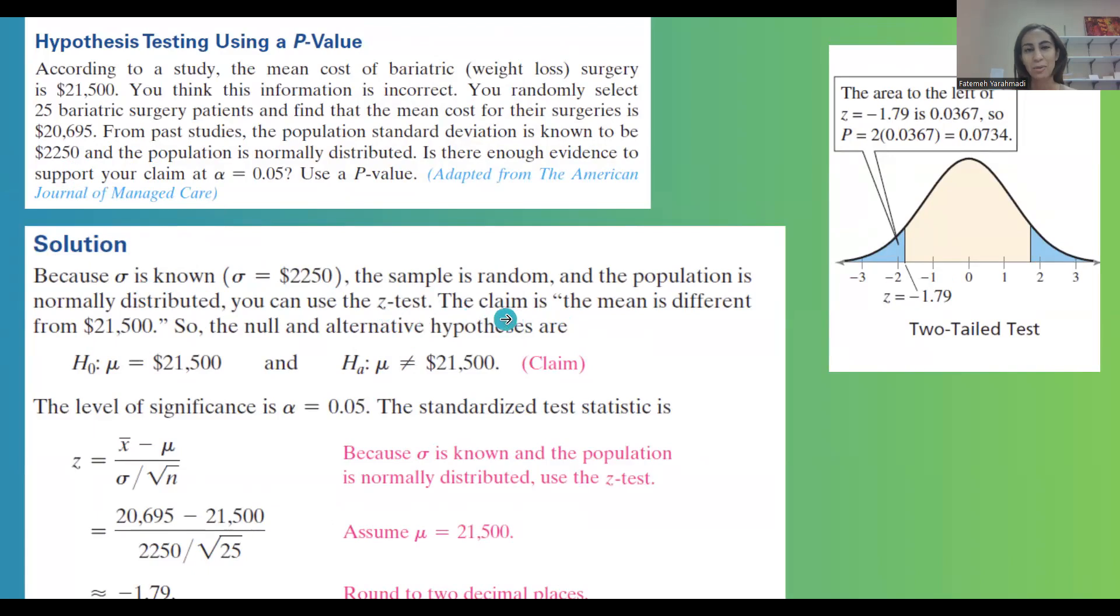Remember the claim says the mean is different from, it's not the same. So it means that the claim is your alternative hypothesis: mu or the guest population average is not $21,500. Its opposite is the null says mu is exactly $21,500 and alternative says no. It's either less than or more. That's how we end up with a two-tailed test.